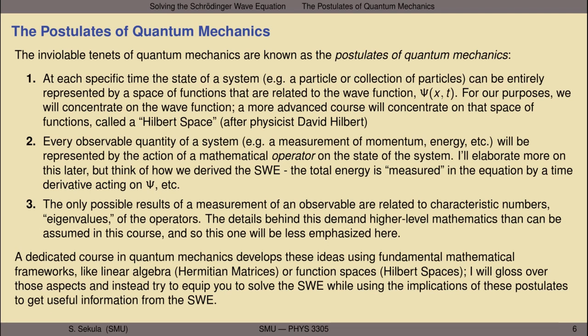Think back to how the Schrödinger wave equation was derived. The total energy is measured by a time derivative acting on the wave function, and other derivatives effectively represent operators that measure quantities of the system — the outcomes of doing experiments. Finally, the only possible results of a measurement of an observable are related to characteristic numbers known as eigenvalues of those operators. A dedicated course in quantum mechanics will develop these ideas using linear algebra, Hermitian matrices, and Hilbert spaces, but here we focus on equipping you to solve the SWE using the implications of these postulates.